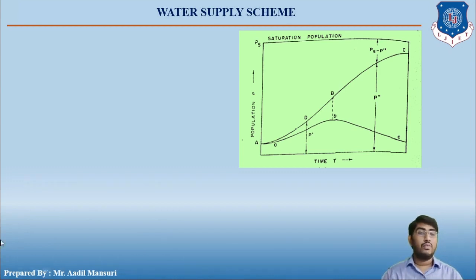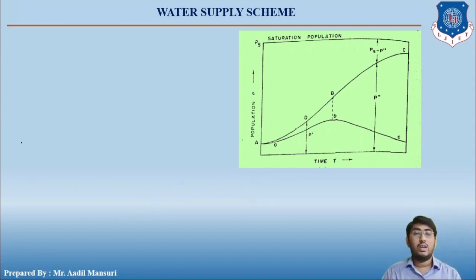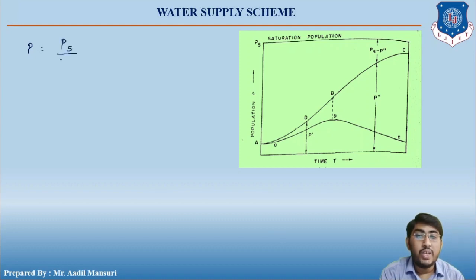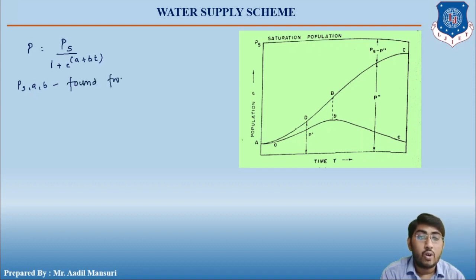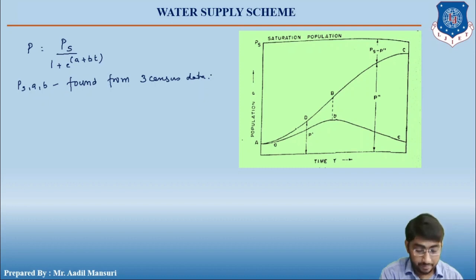This is the graph of the Logistic Curve method, or the Decrease in Rate of Growth method. Let us now learn the formula for finding out the population as per this method. The population can be found with the formula: P equals Ps divided by 1 plus e raised to (a plus bt), where Ps, a, and b are found from three census data.